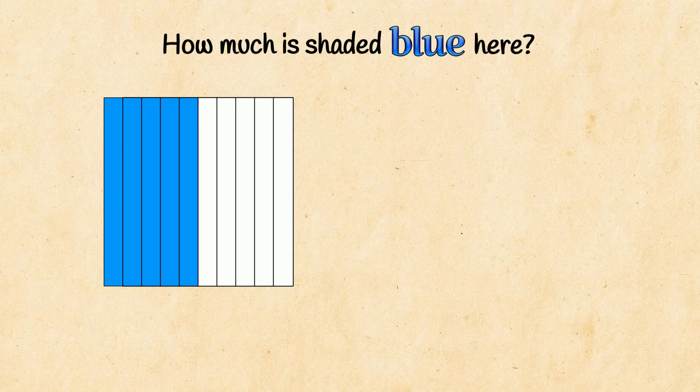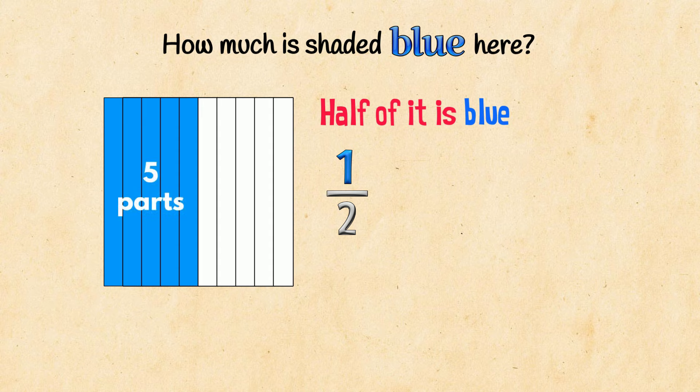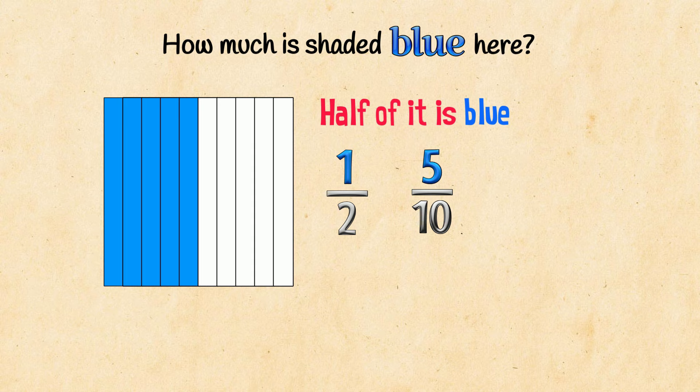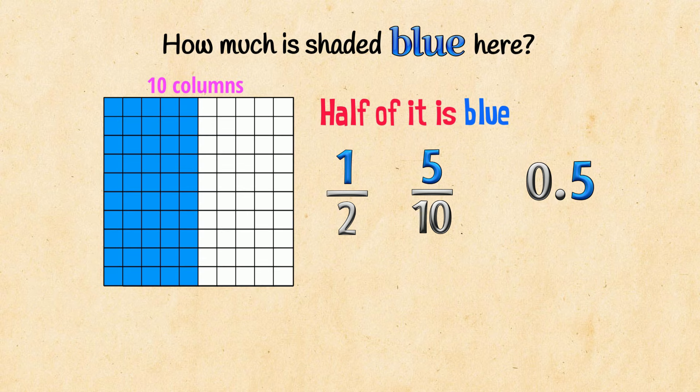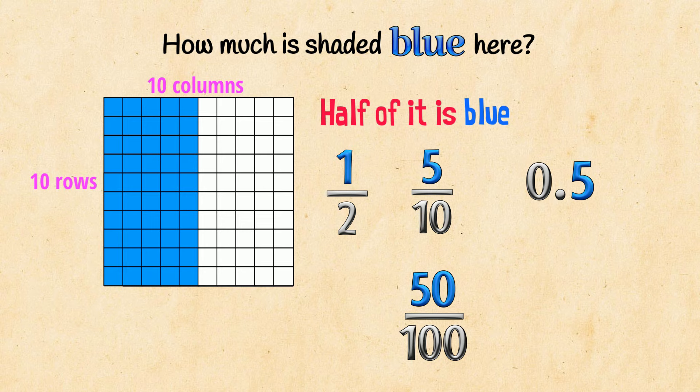You might say half of it is blue. 5 parts out of 10 are blue! 5 tenths then! That's easy to show as a decimal! 0.5. We've got 10 columns and now we've also got 10 rows! You could say 50 parts out of 100 are blue!